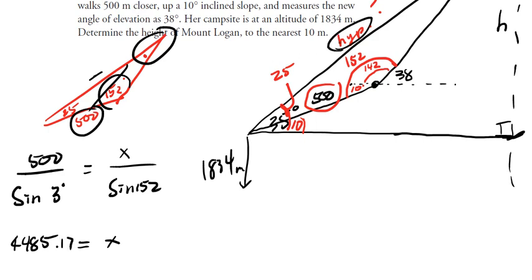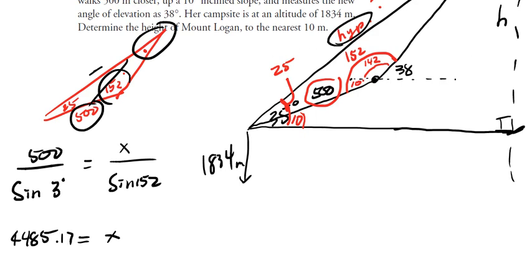So that's going to be the hypotenuse here, this length. Now if we look at this as a right triangle, I can find this height because this is 4485 as a hypotenuse, and this is our original angle of elevation, 35 degrees.